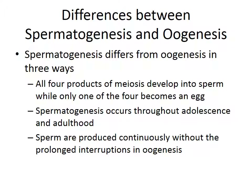The differences between spermatogenesis and oogenesis are subtle. Spermatogenesis differs in three ways: all four products of meiosis develop into sperm, whereas only one of the four meiotic products becomes an egg in females. Spermatogenesis occurs throughout adolescence and adulthood, with sperm produced continuously — without the prolonged interruptions seen in oogenesis. These are the subtle differences, but both processes are the same in that the genetic component is divided in half.